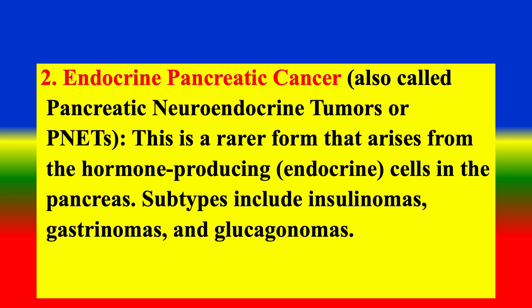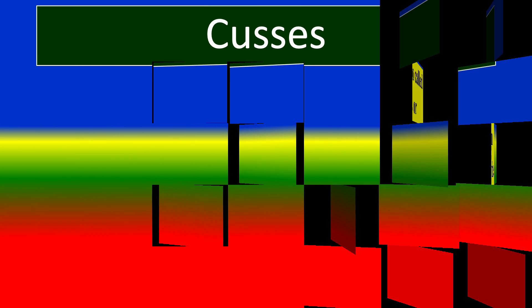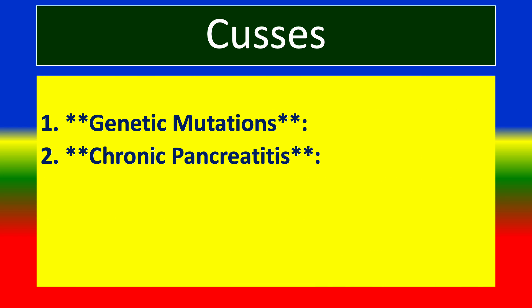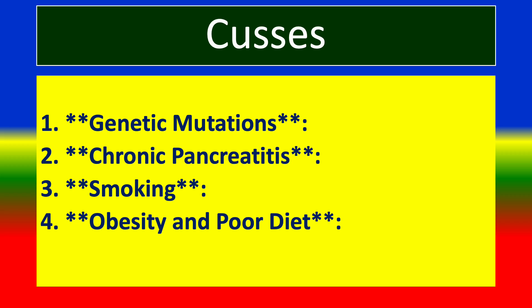Subtypes of endocrine pancreatic cancer include insulinomas, gastrinomas, and glucagonomas. The main causes of pancreatic cancer include genetic mutations, chronic pancreatitis, smoking, obesity and poor diet, and diabetes.